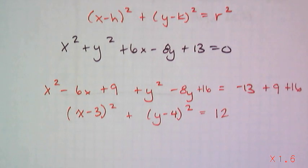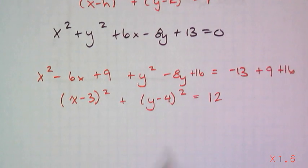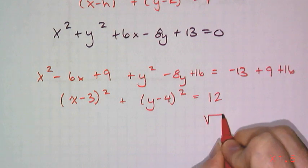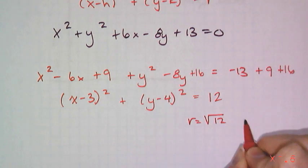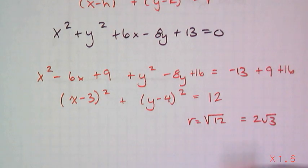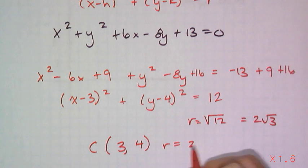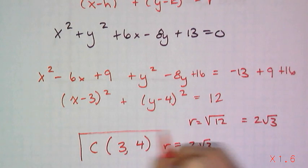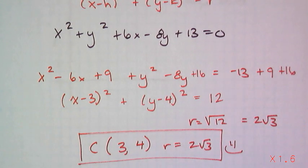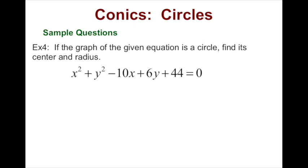I can factor this to (x-3)² + (y-4)². Then I have to add -13 + 9 + 16, which gives me 12. My radius is the square root of 12, which is 2√3. My center is located at (3,4).